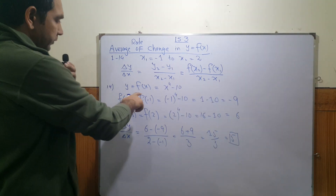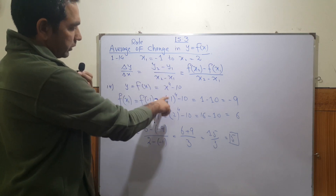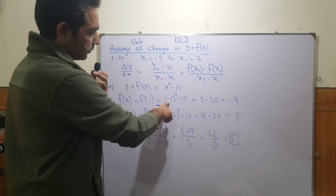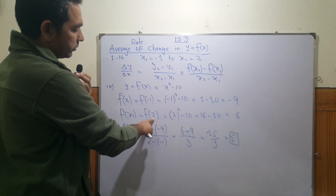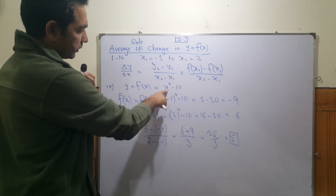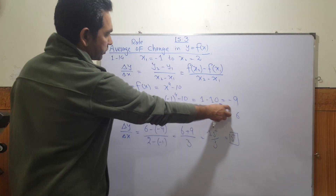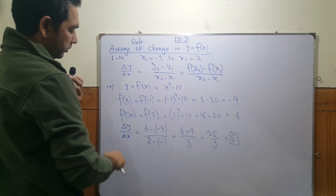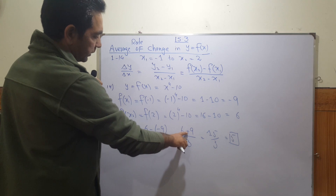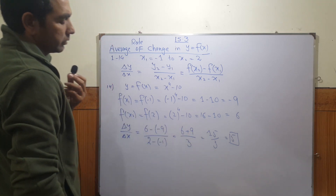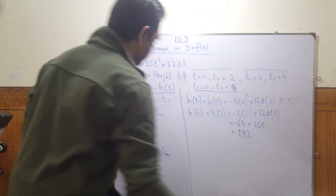The last question in this group uses f(x) = x⁴ - 10. For f(x₁) = f(-1): (-1)⁴ - 10 = 1 - 10 = -9. For f(x₂) = f(2): 2⁴ - 10 = 16 - 10 = 6. Substituting: (6 - (-9)) divided by (2 - (-1)) = 15 divided by 3 = 5.